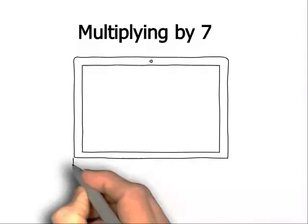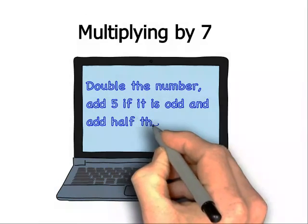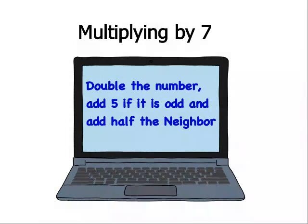Multiplying by 7. The rule for multiplying by 7 is double the number, add 5 if the number is odd, and add half the neighbour.